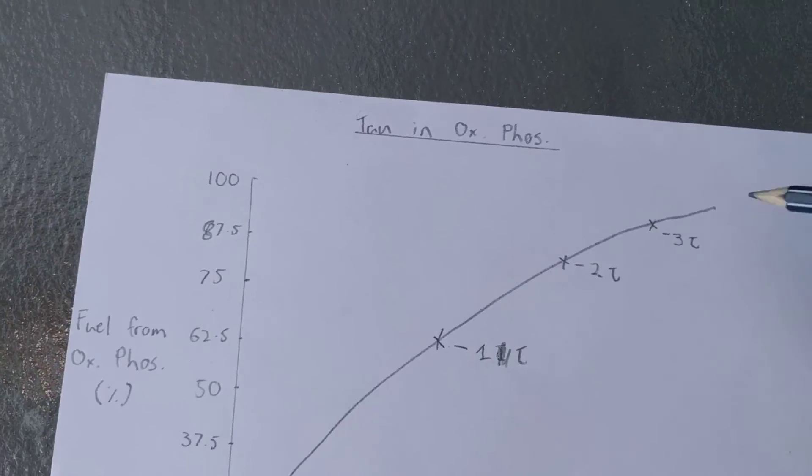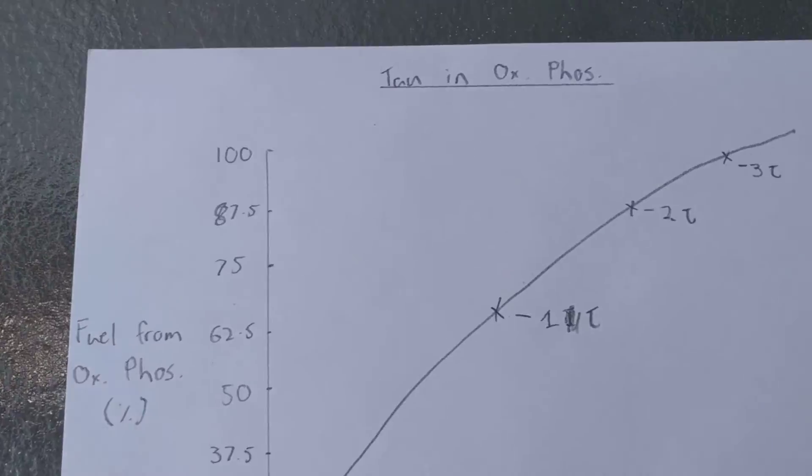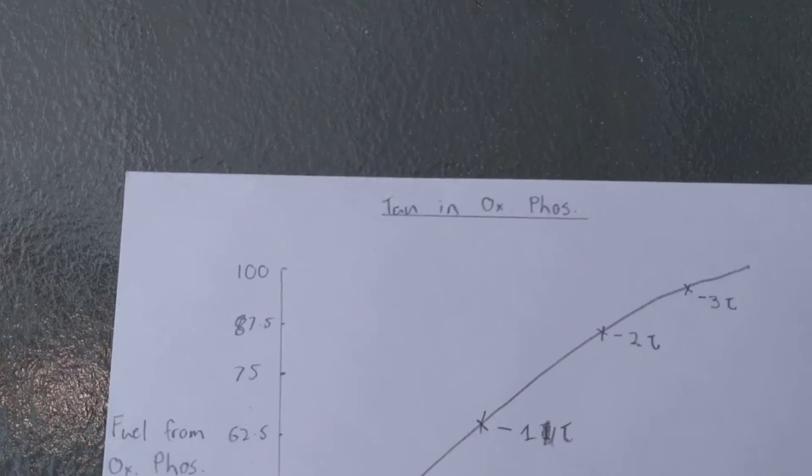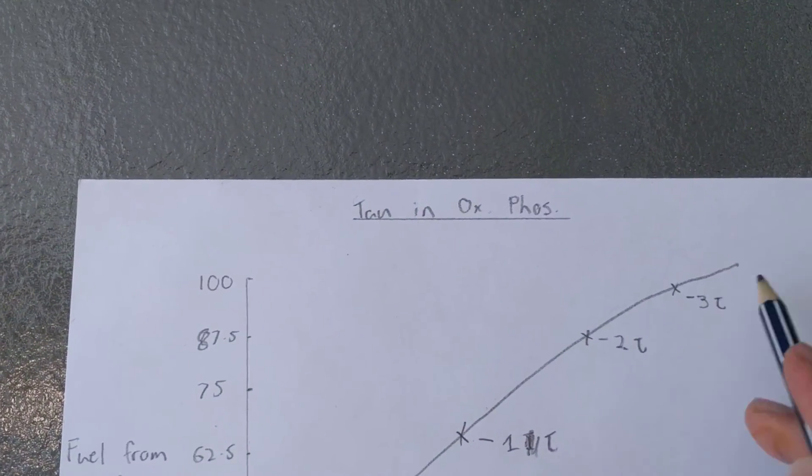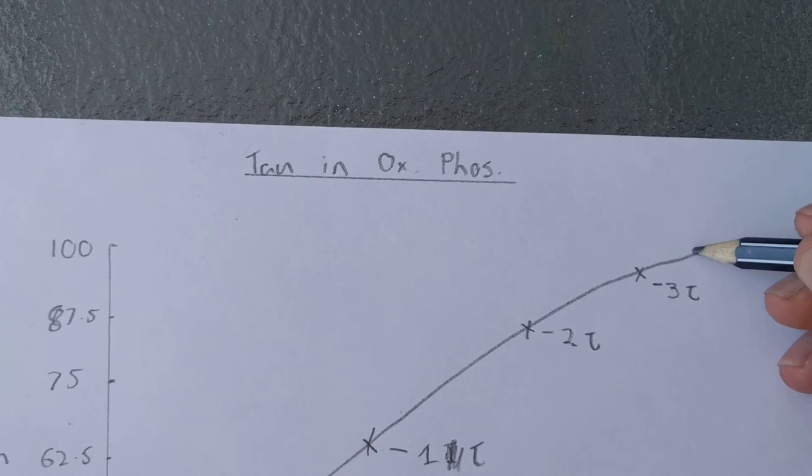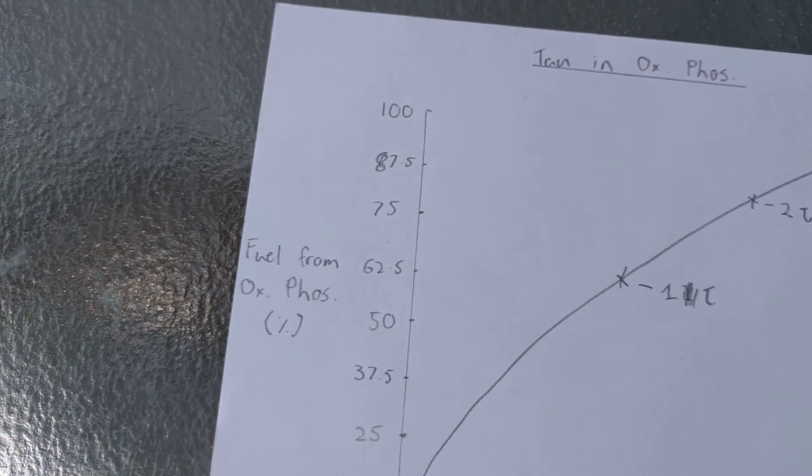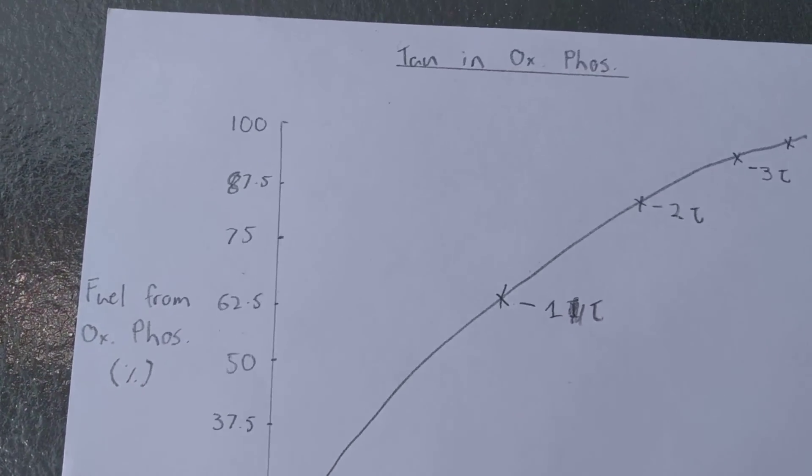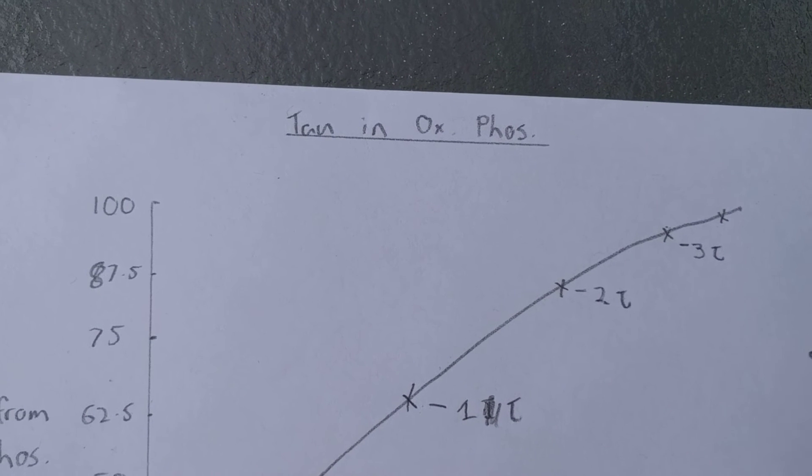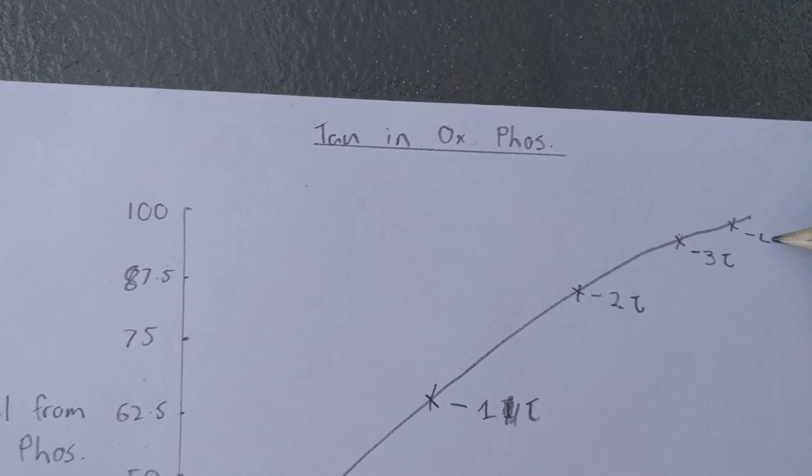And then this line, I just did a freehand, but it should be pretty much straight at that point, and then 63% between that line and 100 is 4 tau.